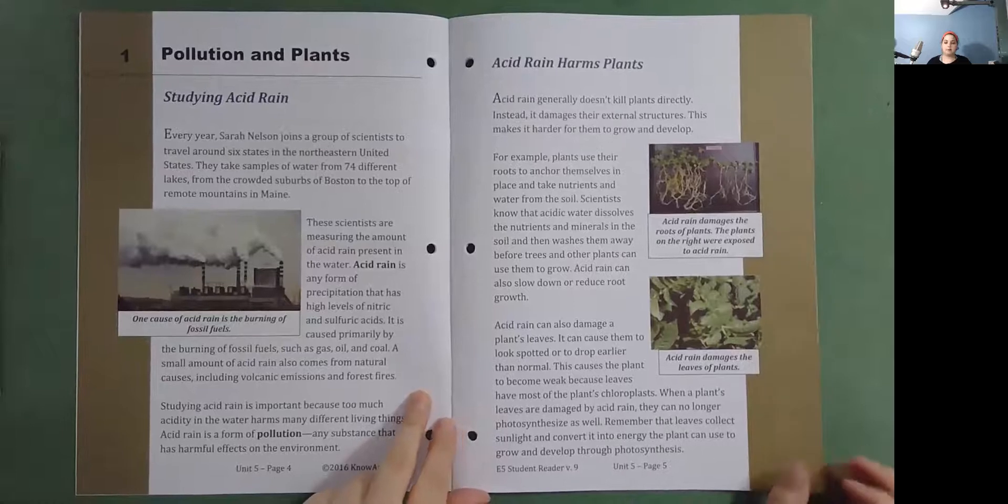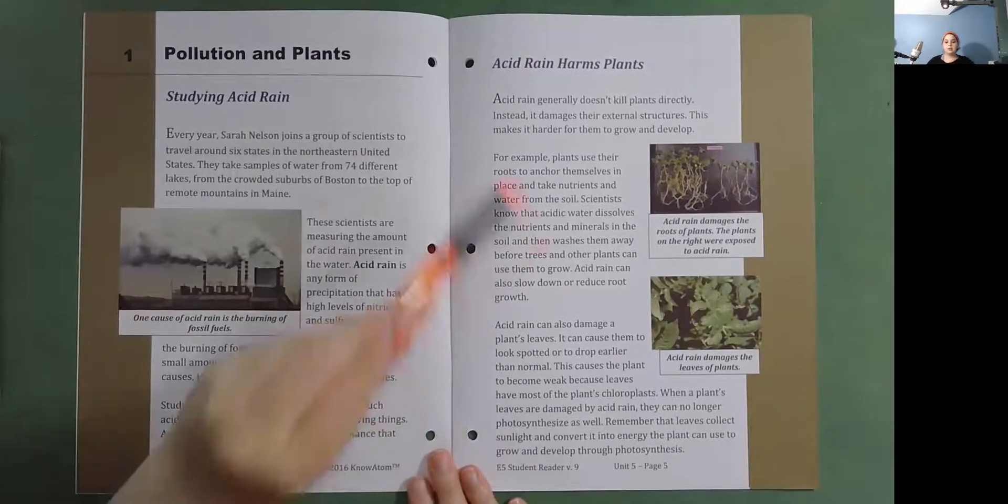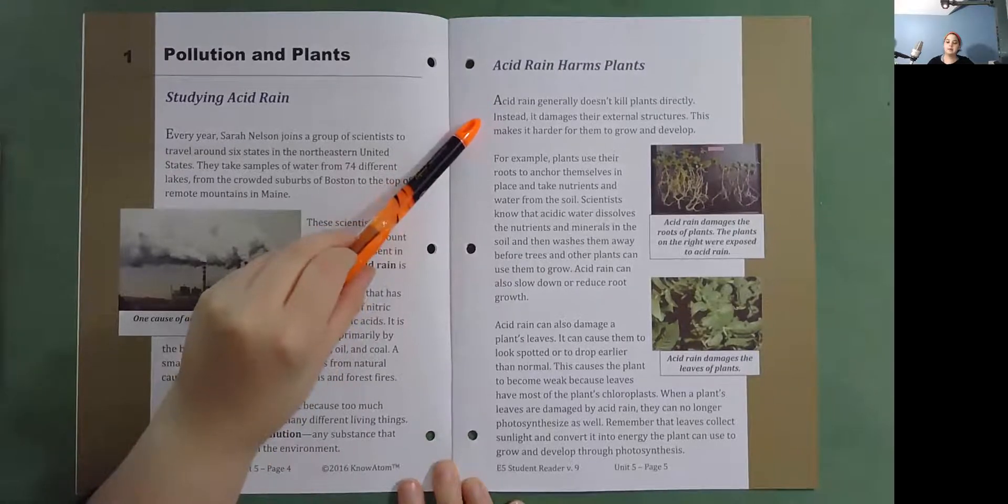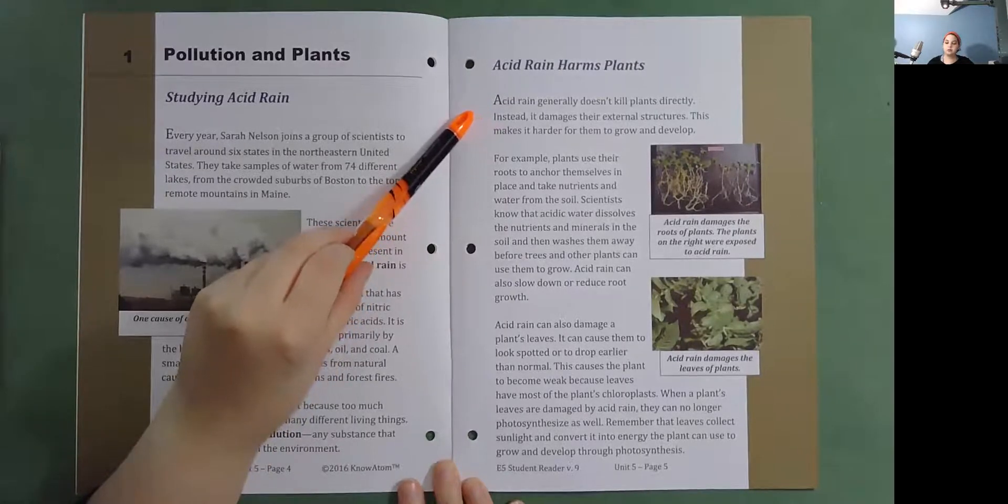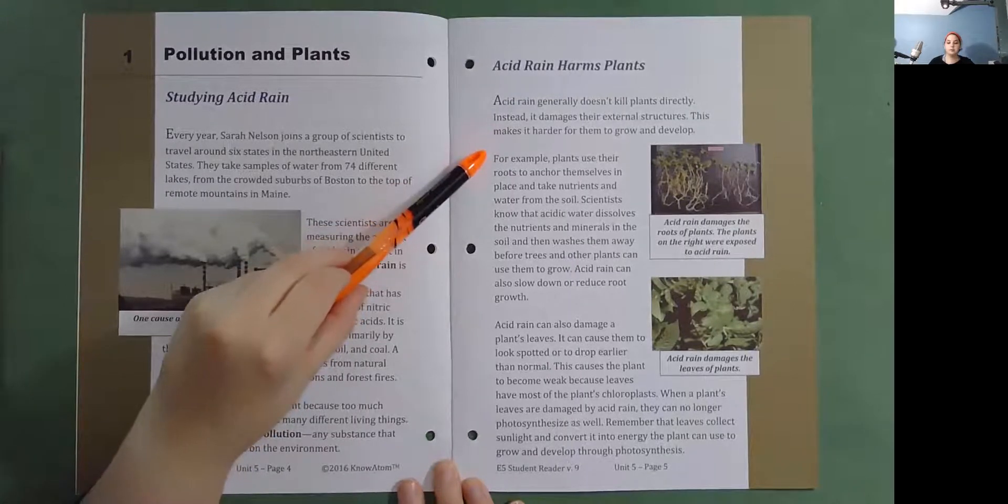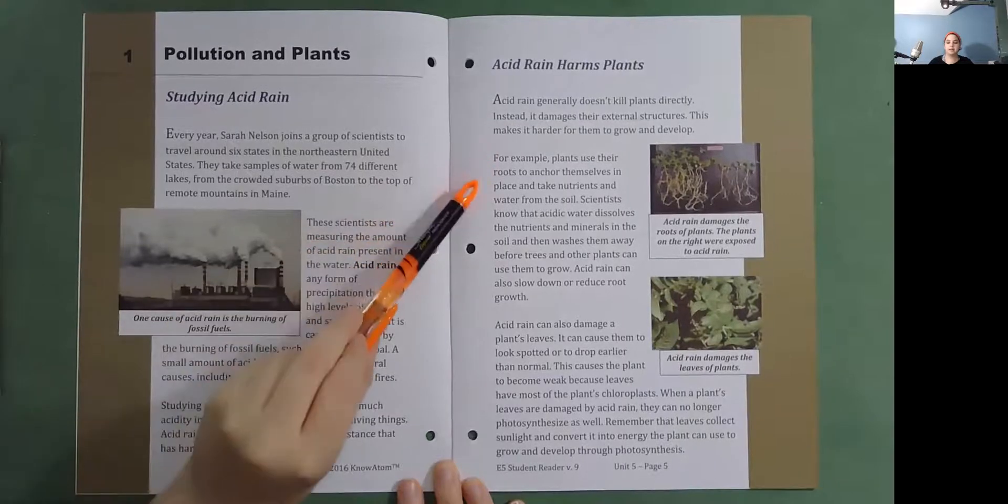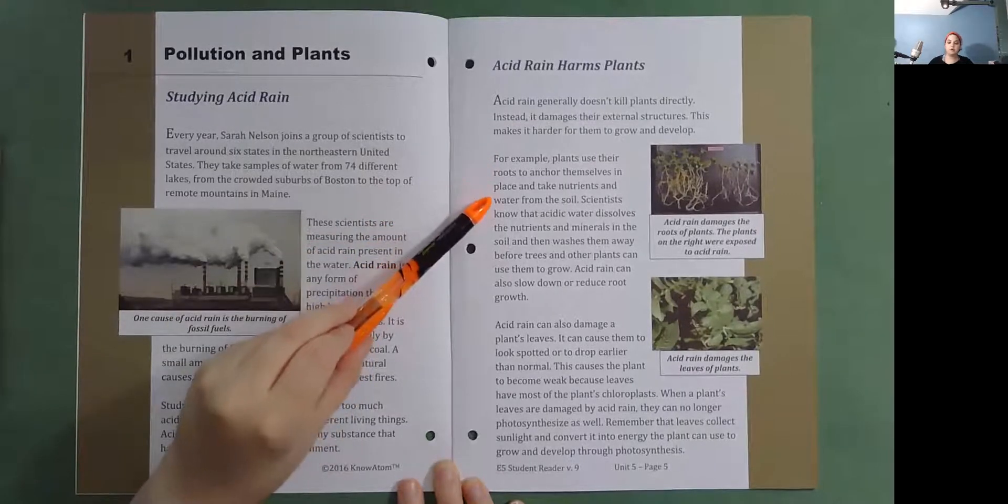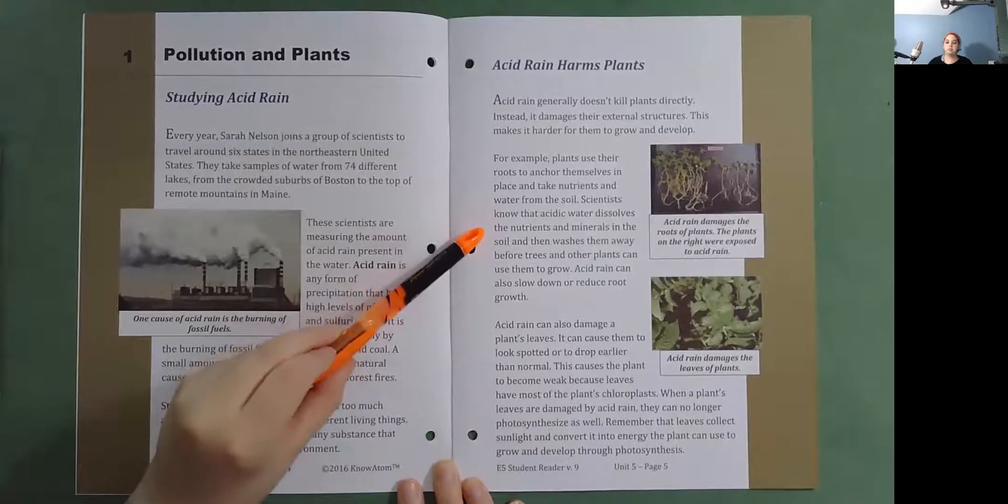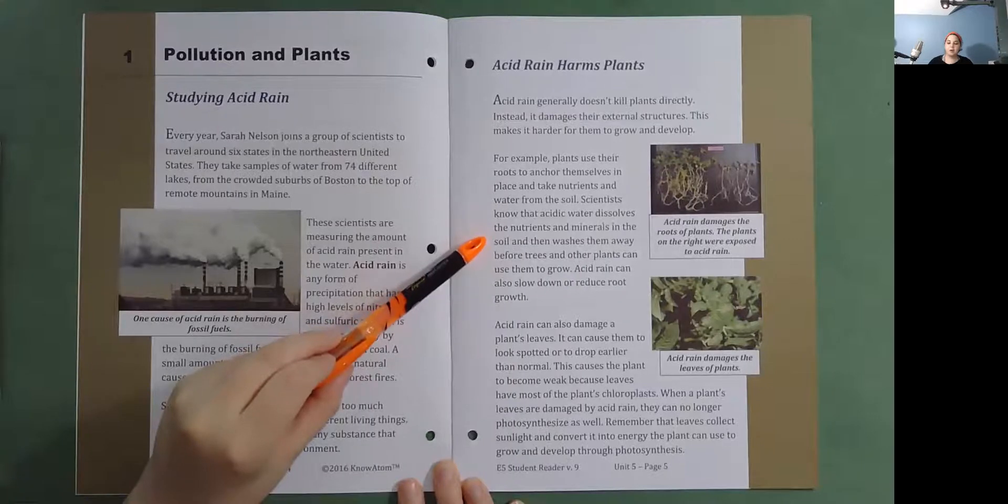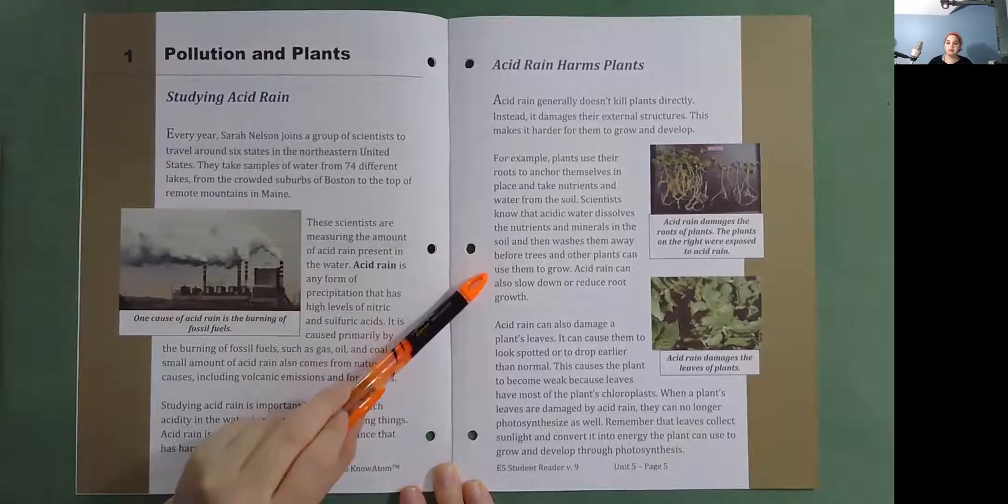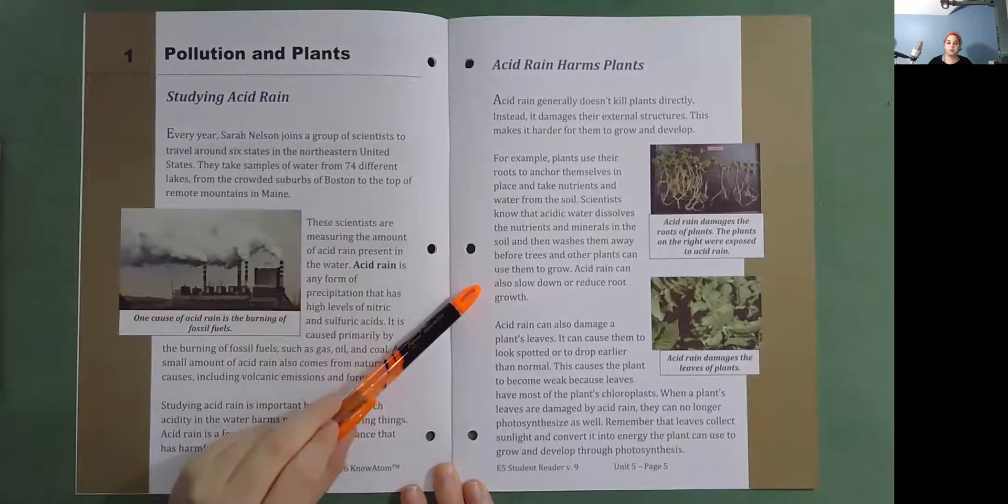Acid Rain Harms Plants. Acid rain generally doesn't kill plants directly. Instead, it damages their external structures. This makes it harder for them to grow and develop. For example, plants use their roots to anchor themselves in place and take nutrients and water from the soil. Scientists know that acidic water dissolves the nutrients and minerals in the soil and then washes them away before trees and other plants can use them to grow.